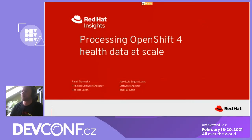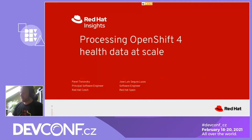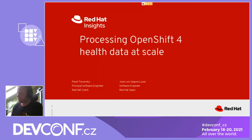Hello everybody. I'm going to talk about how to process OpenShift health data at scale. This is a sequel to the presentation that was presented at noon, named 'Preventing Catastrophes using OpenShift data.' In this presentation, I am going to talk mainly on the processing part — how we process such data and how we can scale the processing pipeline.